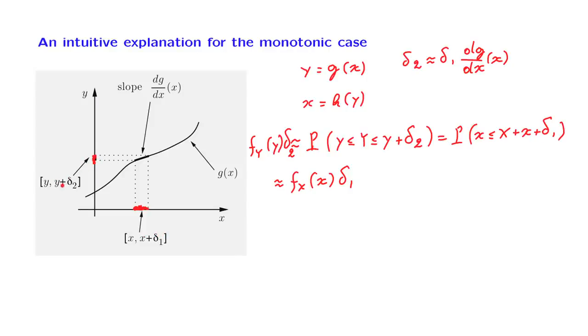When y advances by delta_2, x is going to advance by an amount which is how much y advanced times the slope or the derivative of the function that maps y's into x's. And this function is the inverse function.